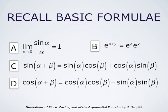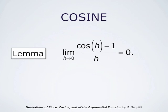In what follows, we use these formulas and the definition of the derivative. We also need to know that the limit as h goes to 0 of cosine of h minus 1, divided by h, is 0.